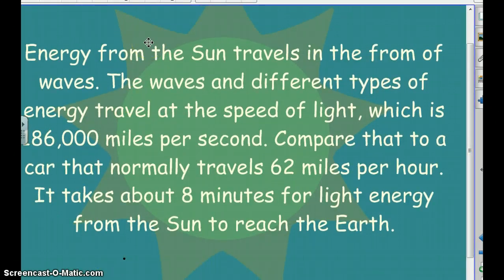Energy from the sun travels in waves, kind of like waves in the ocean. They travel at the speed of light, which is about 186,000 miles per second. Compare that to a car traveling 62 miles per hour. It only takes eight minutes for that light to travel the 93 million miles from the sun to the earth.